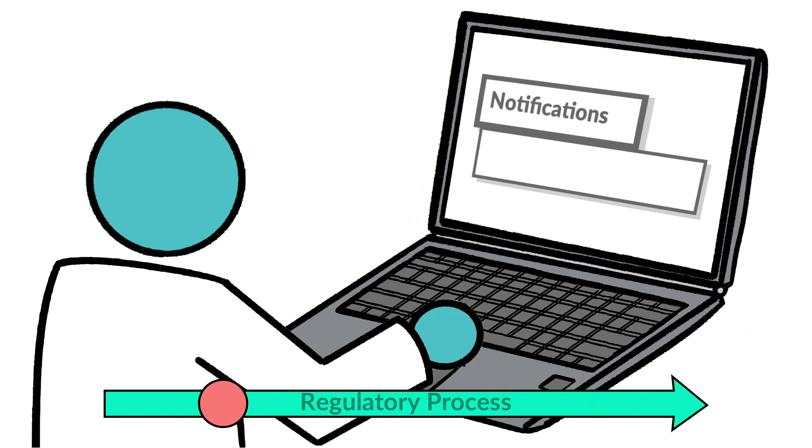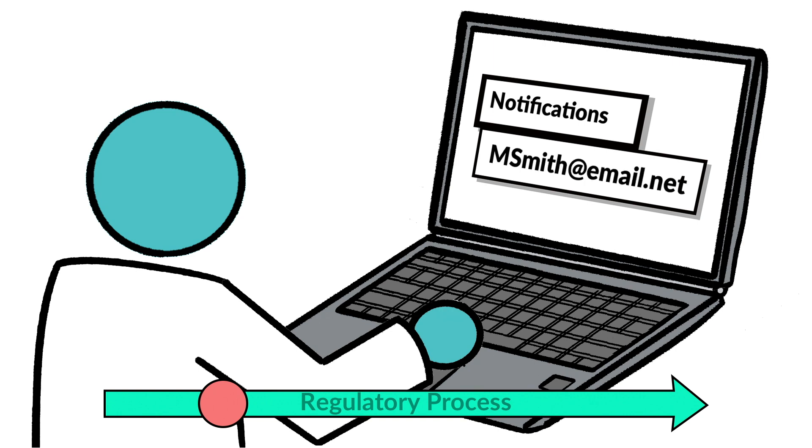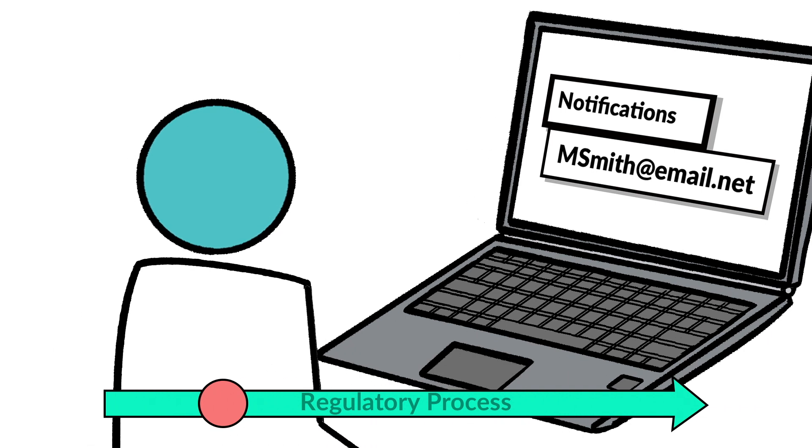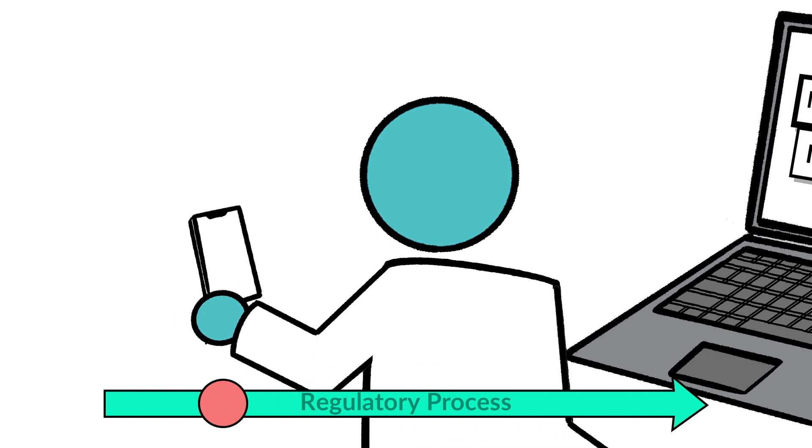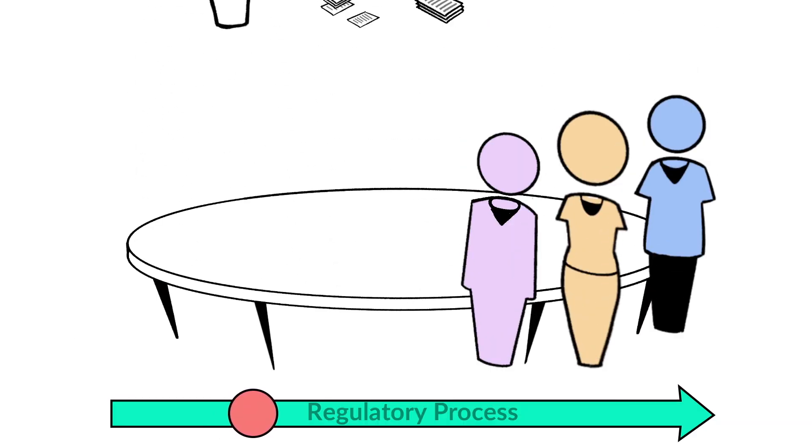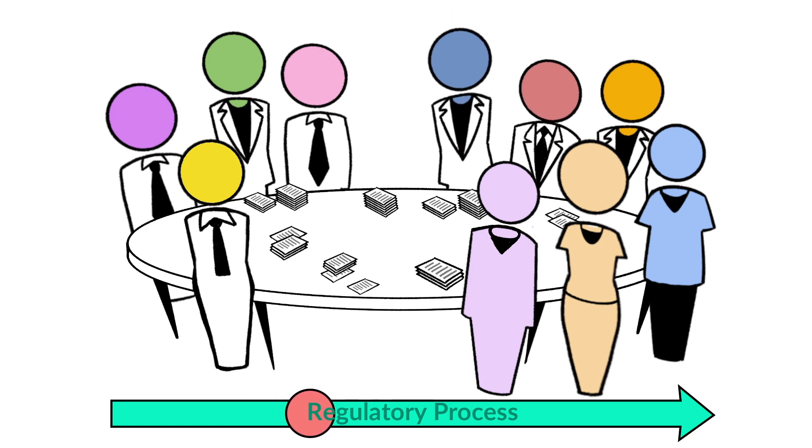Early in the process, CARB often hosts workshops to share information on initial ideas. Anyone interested in the regulatory effort is encouraged to sign up to receive email alerts on documents posted, meeting dates, and board hearings. After the initial planning takes place, CARB prepares draft documents including regulatory text and a staff report that explains the proposed regulation.